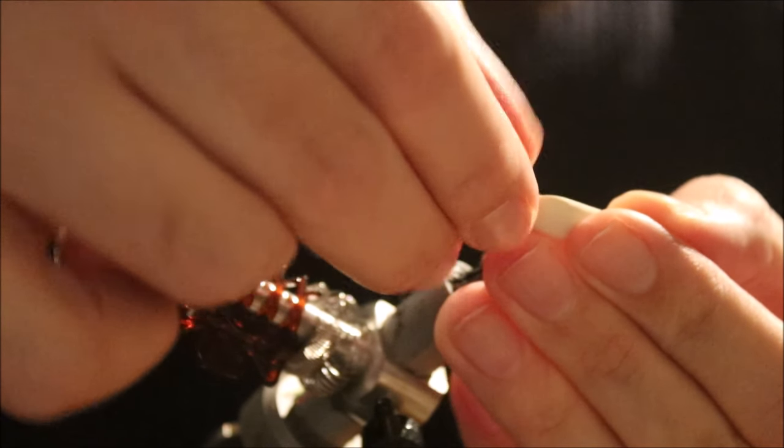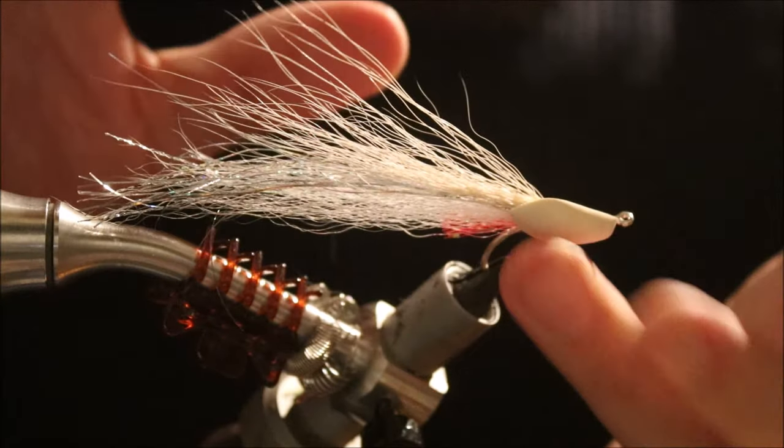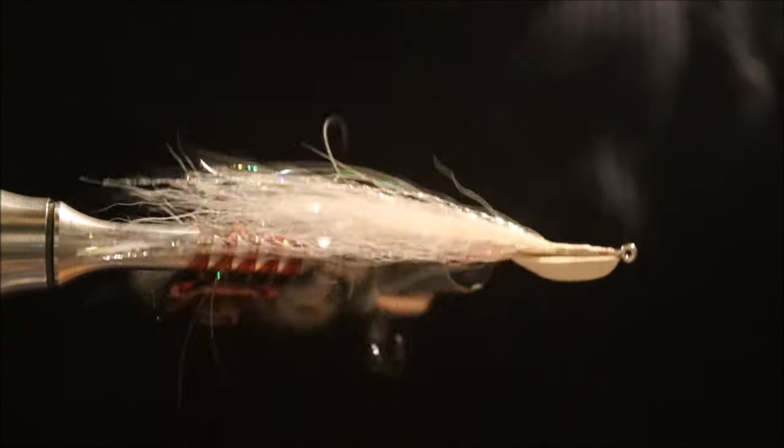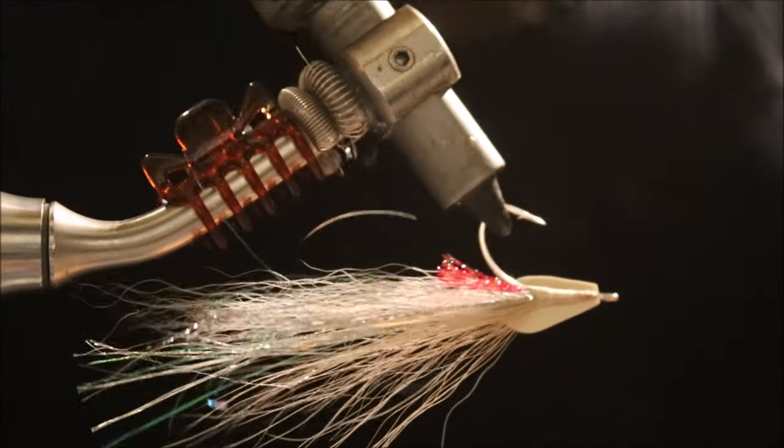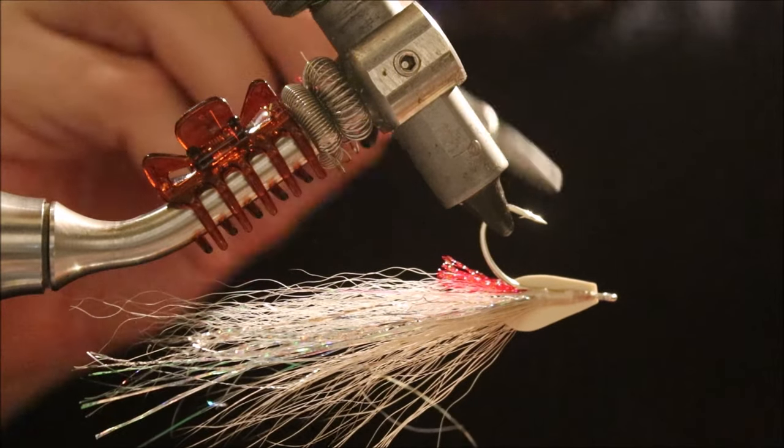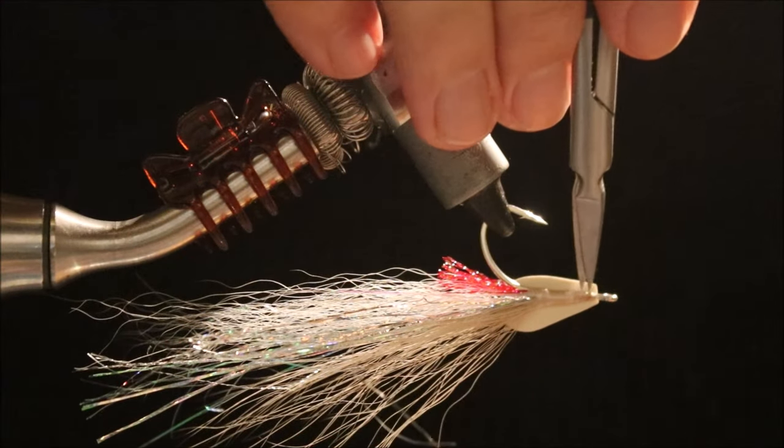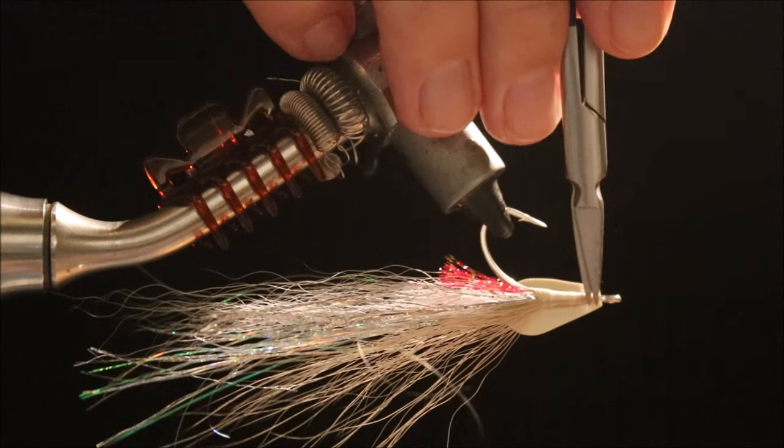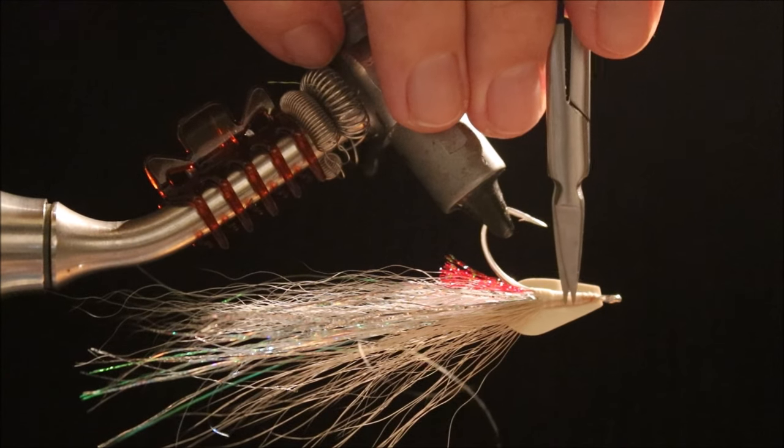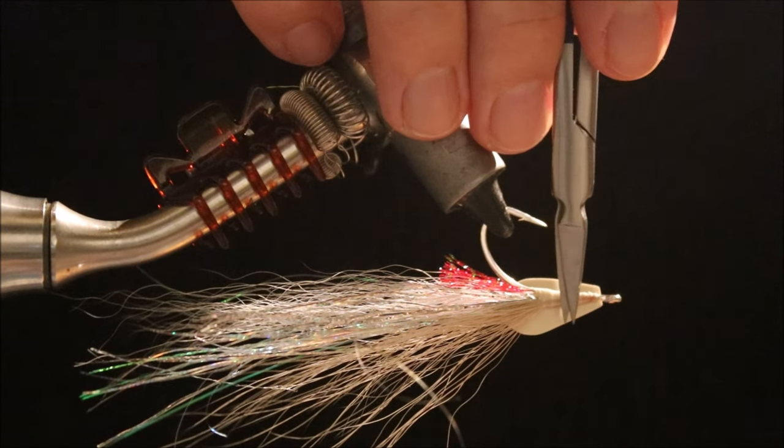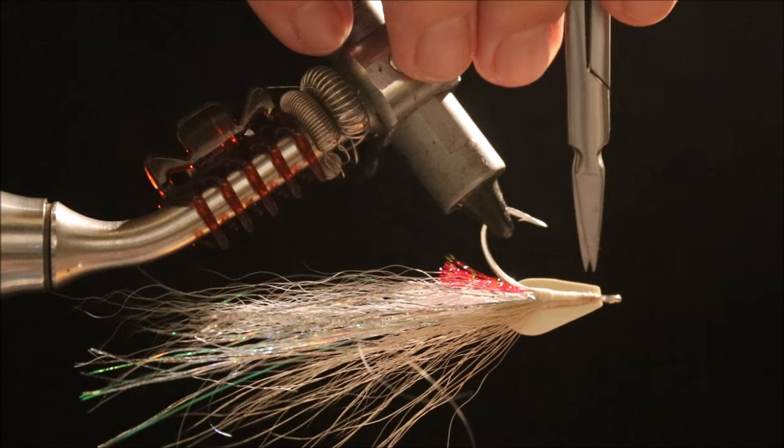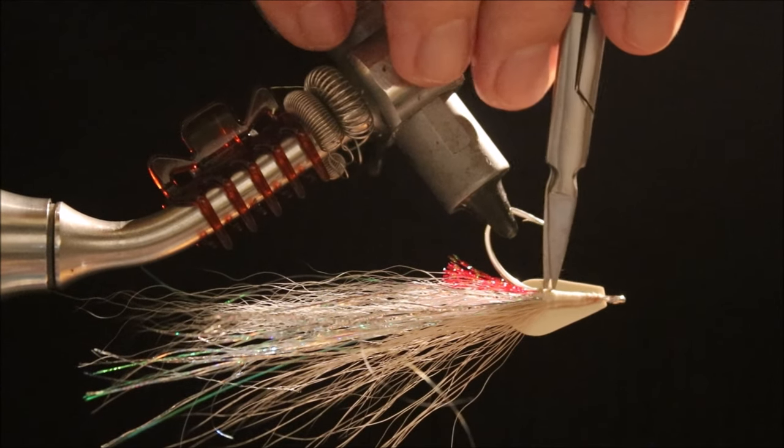You want the underside running parallel to the shank of the hook. As you can see here there is about two thirds above the shank and about a third below roughly.